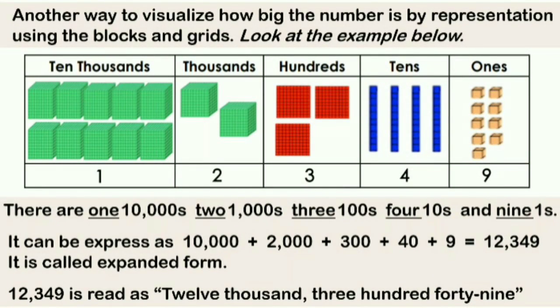Another way to visualize how big the number is by representation using blocks and reads. Look at the example here. There are 10 blocks of 10,000s, 2 thousands, 3 hundreds, 4 tens, and 9 ones. It can be expressed in expanded form as 10,000 plus 2,000 plus 300 plus 40 plus 9, a total of 12,349. And the symbols can also be read as 12,349 in words.